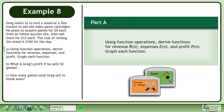Greg wants to rent a stand at a flea market to sell old video game cartridges. He plans to acquire games for $4 each from an online auction site, then sell them for $12 each. The cost of renting the stand is $160 for the day.